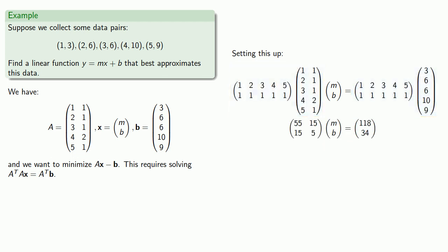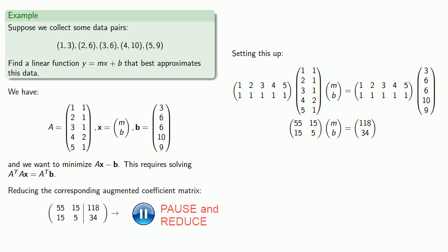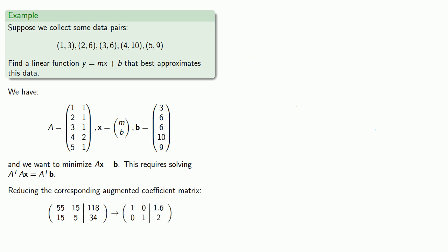And now this is a beautiful system of two equations in two unknowns. And so reducing the corresponding augmented coefficient matrix gives us our solution: M equals 1.6, B equals 2, and the best fit line is Y equals 1.6X plus 2.